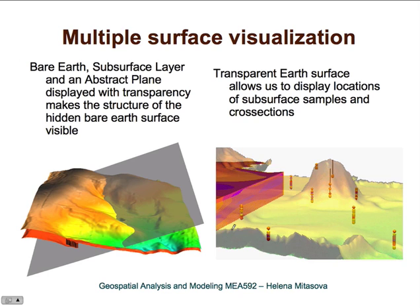Another tool we have when displaying multiple surfaces is transparency. In this example we have introduced a tilted plane — for example, if we want to include a geological fault. This plane can be made transparent so that you can see the structure of the surface under it. Overall, the use of transparency is rather tricky, but for certain applications it can be quite useful. You can try it out during the assignments.